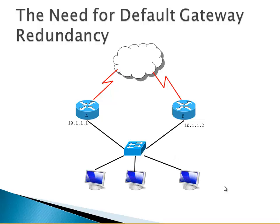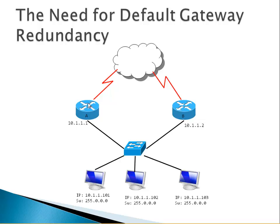On the LAN we have three PCs. We have two choices: we can set the default gateway to Router A or we can set the default gateway to Router B — the PCs can exit the network through both routers. Say that we choose default gateway 10.1.1.1, so all the PCs will use this as a default gateway when they want to go to the internet.